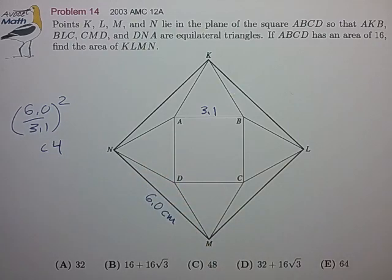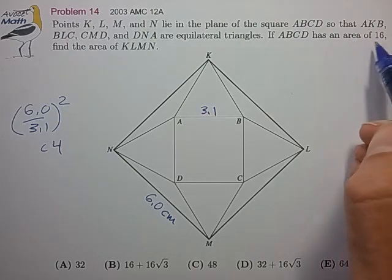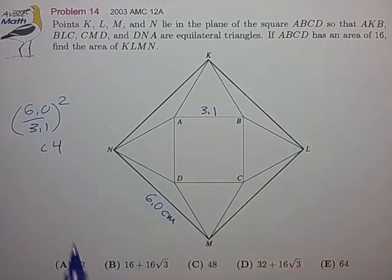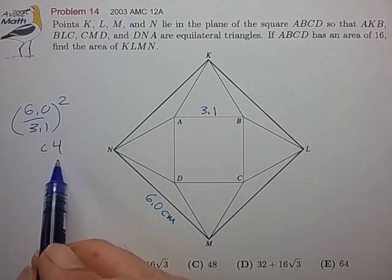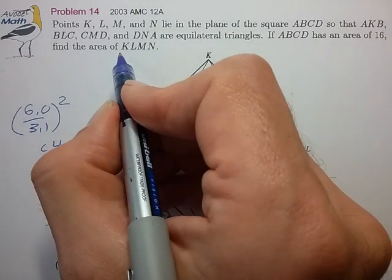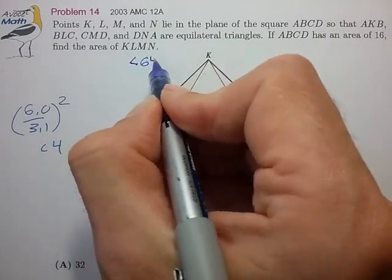So from that we can make a pretty quick estimate as to the area of the outside square, because the area of the inner square is 16. We know that the ratio is a little less than 4, so we know the answer of the area of KLMN is just a little bit less than 64.